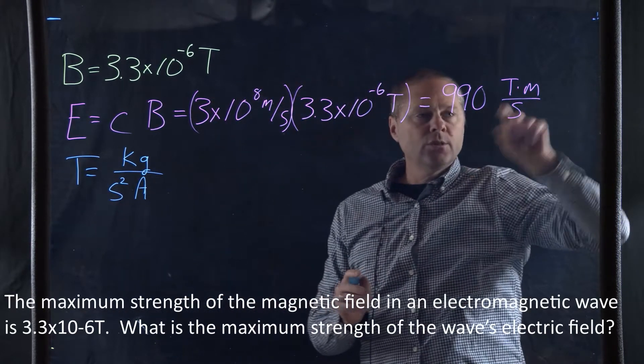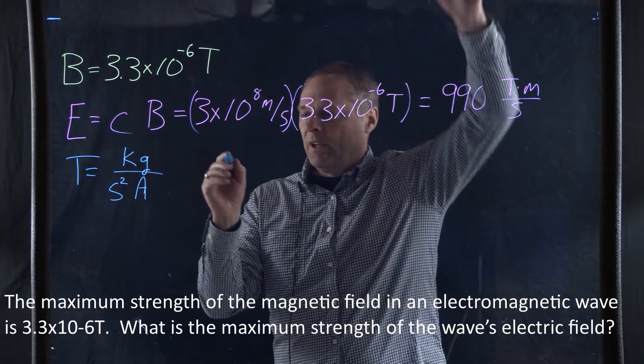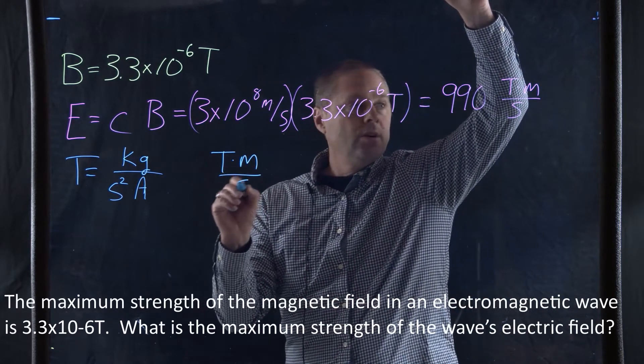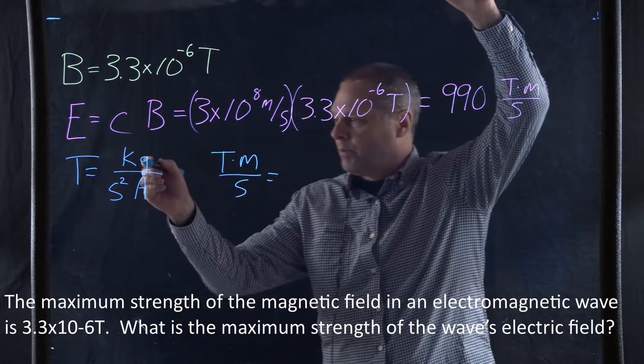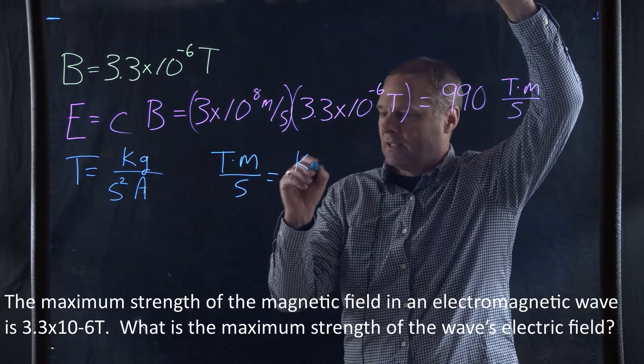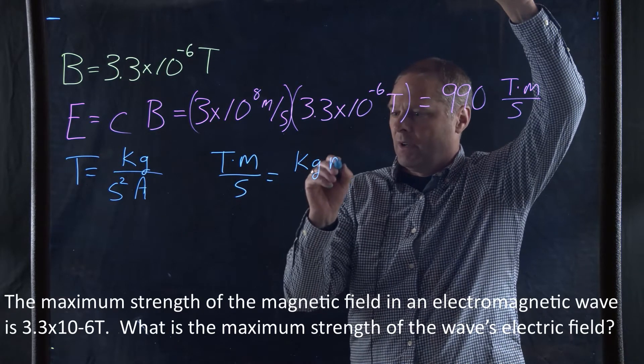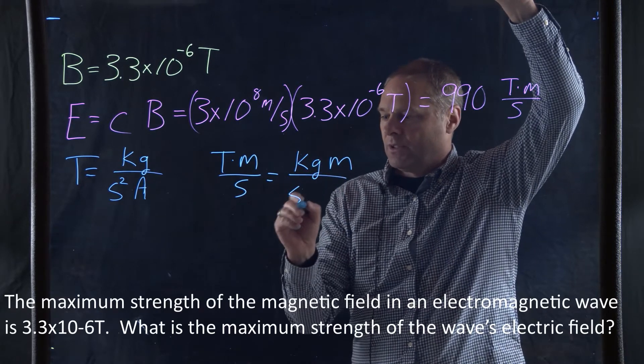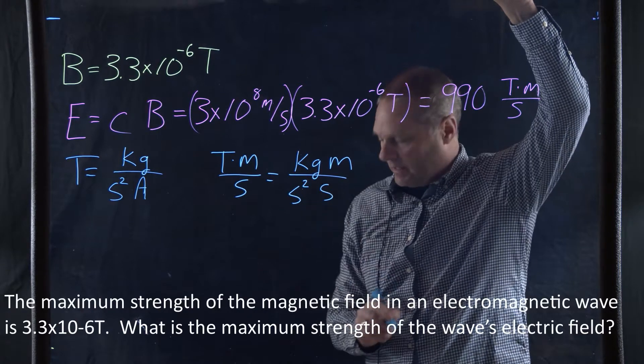Now, let's look at this unit of a Tesla meter per second. And so we can plug this information in for the Tesla and we get kilogram meter per second squared second.